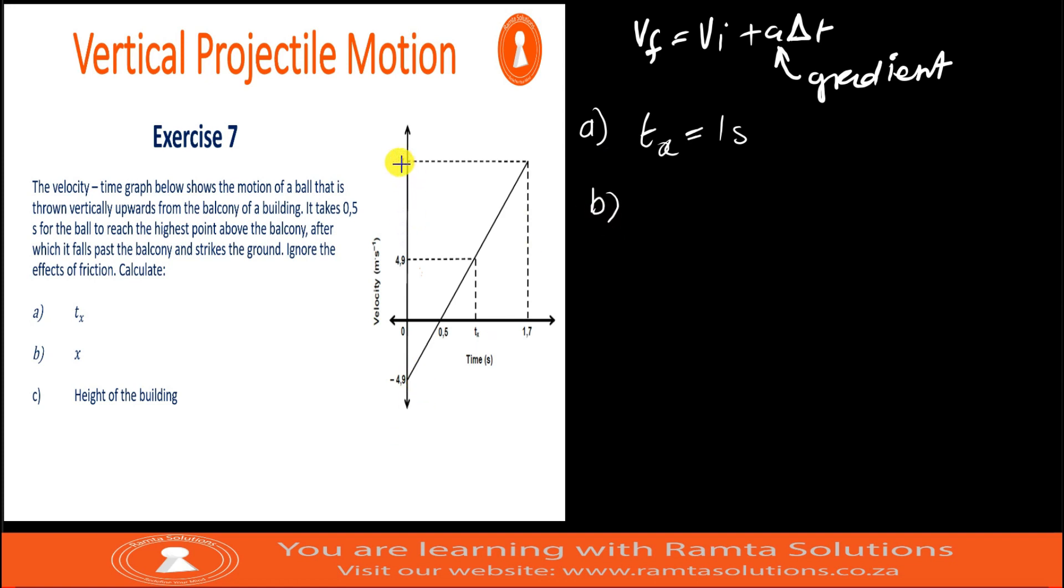Number B, we are looking for x, which is final velocity. We will use the formula VF equals VI plus A delta T. What is VF? It's called x. What is initial velocity? It's negative 4.9. What is our acceleration? It's positive 9.8, and the time taken is 1.7 meters. Now, let's get our answer. Negative 4.9 plus 9.8 times 1.7. Our answer is 11.76 meters per second. It's a positive answer.